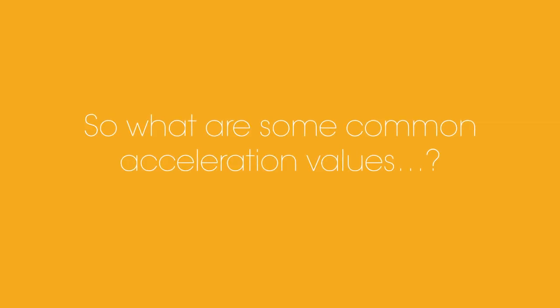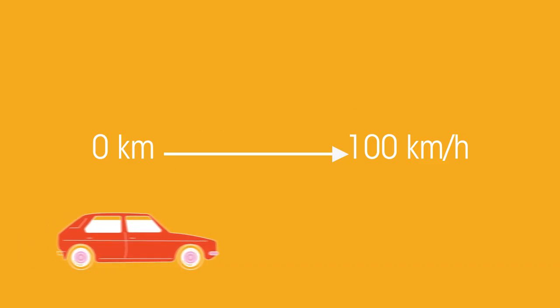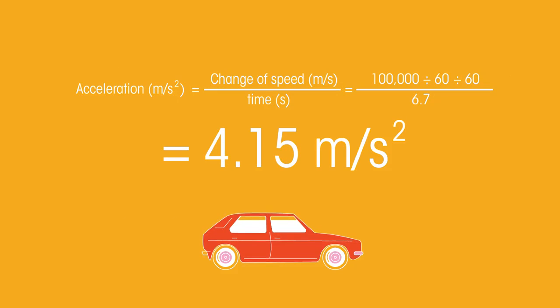So what are some common acceleration values? We already know acceleration is measured in meters per second squared. A common hatchback car can reach 100 kilometers an hour in 6.7 seconds. This gives it an acceleration of 4.15 meters per second squared. This calculation is because we have to turn the 100 kilometers into meters first, then turn the per hour into seconds by turning it into minutes and then seconds, and divide it by 6.7 seconds to get the acceleration.